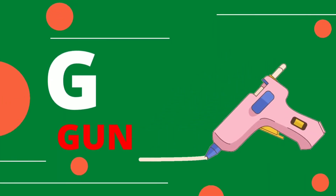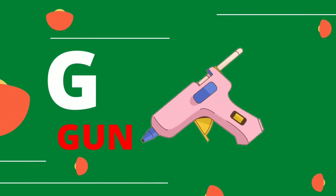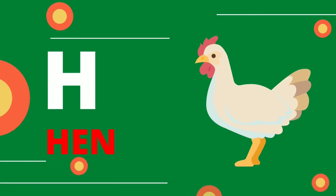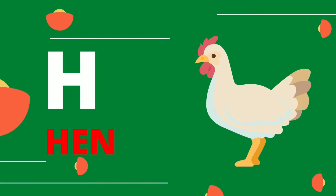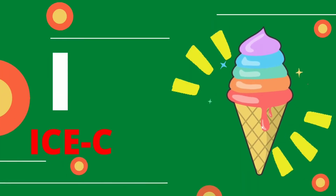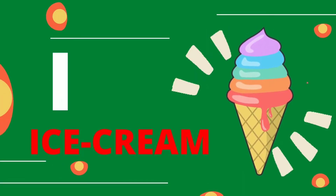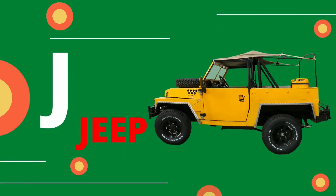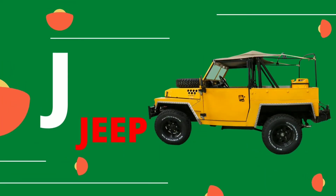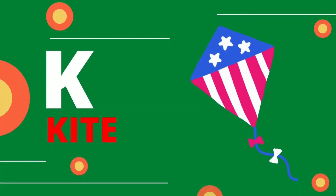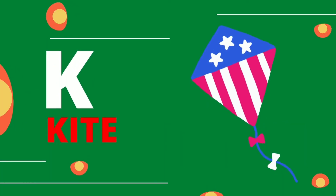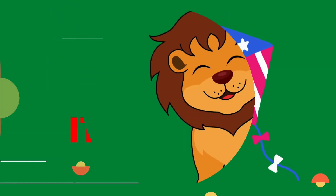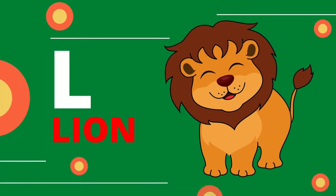G for Gun. H for Hen. I for Ice Cream. J for Jeep. K for Kite. L for Lion.